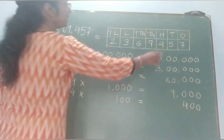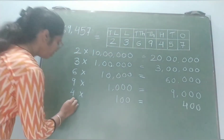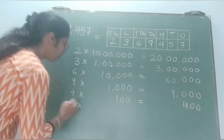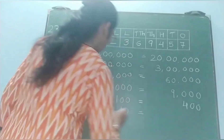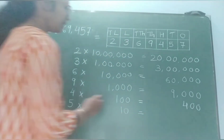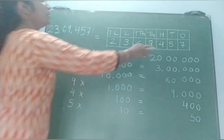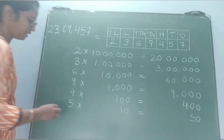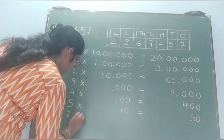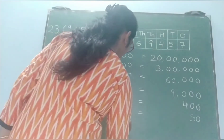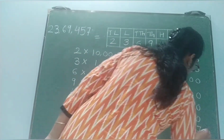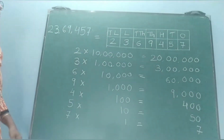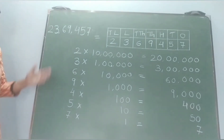5 is in the tens place, so 5 gets multiplied by 10. So the value of 5 is 50. Now see the next number: 7 is in the ones place, so 7 gets multiplied by 1. So the value of 7 is 7.